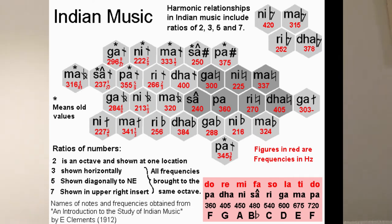When we have a ratio of five, we move diagonally up to the right — maybe five over four or five over eight. And when we have a ratio of seven, it moves out into the other patch, which is one of the ones that falls a little bit in the cracks in our music.